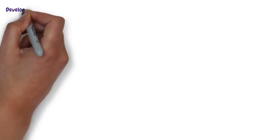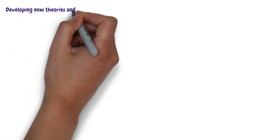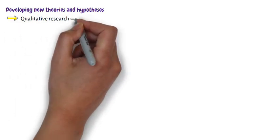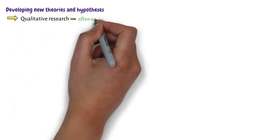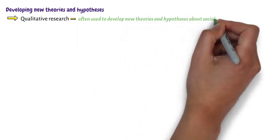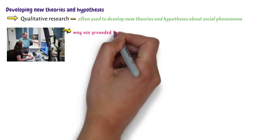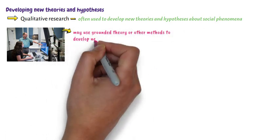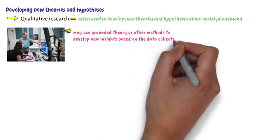Developing new theories and hypotheses. Qualitative research is often used to develop new theories and hypotheses about social phenomena. Researchers may use grounded theory or other methods to develop new insights based on the data collected.